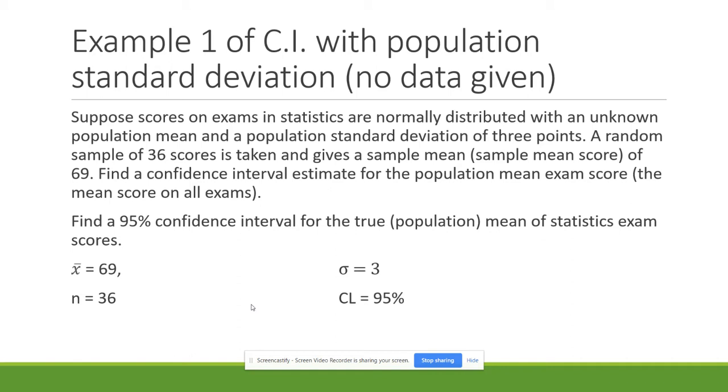A random sample of 36 scores is taken and gives a sample mean score of 69. Find the confidence estimate for the population mean exam scores, which is the mean scores for all of the exams.